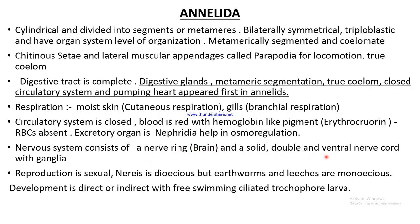The nervous system consists of a nerve ring — the brain — and a solid double ventral nerve cord with ganglia. Reproduction is sexual; Nereis is dioecious, but earthworms and leeches are monoecious. Development is direct or indirect with a free-swimming ciliated trochophore larva.